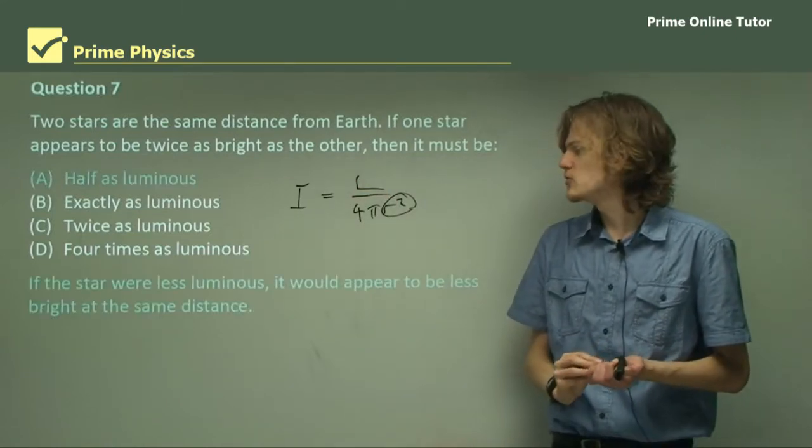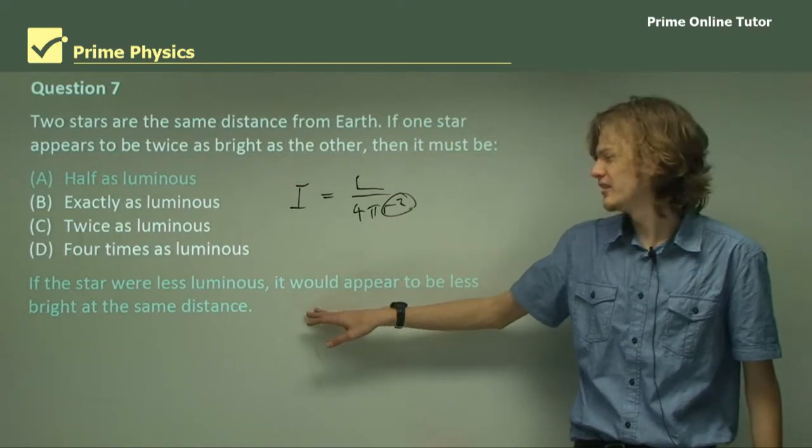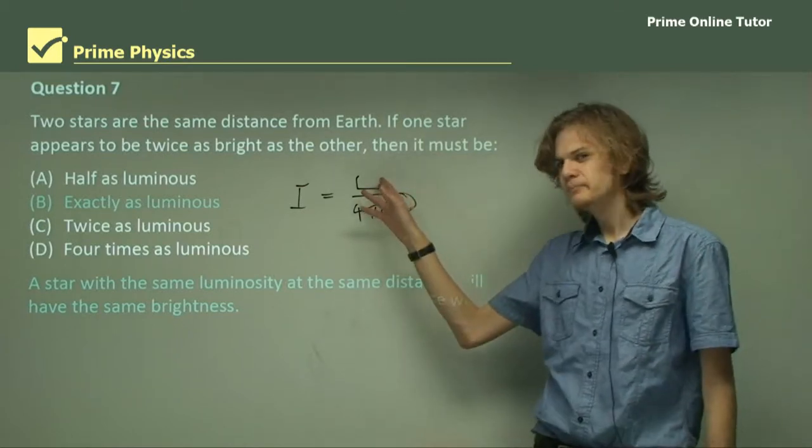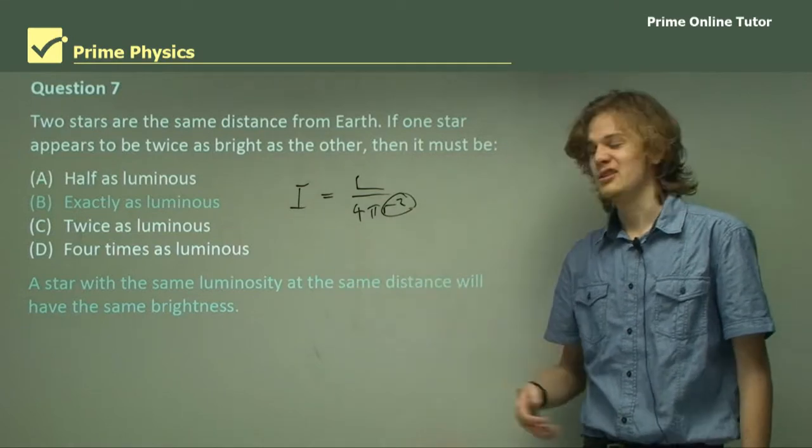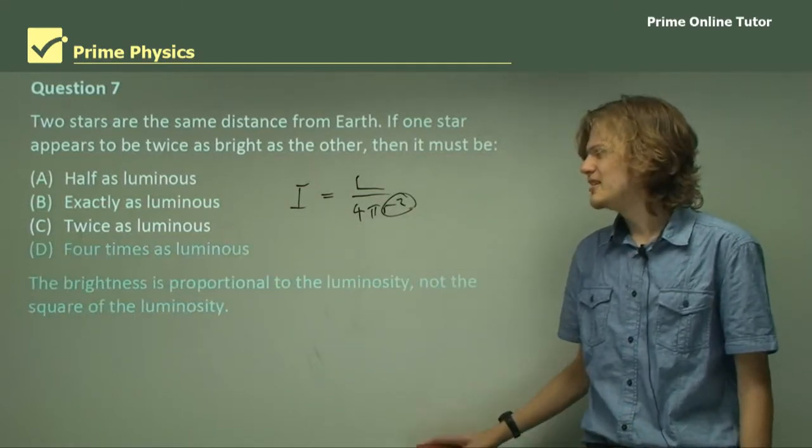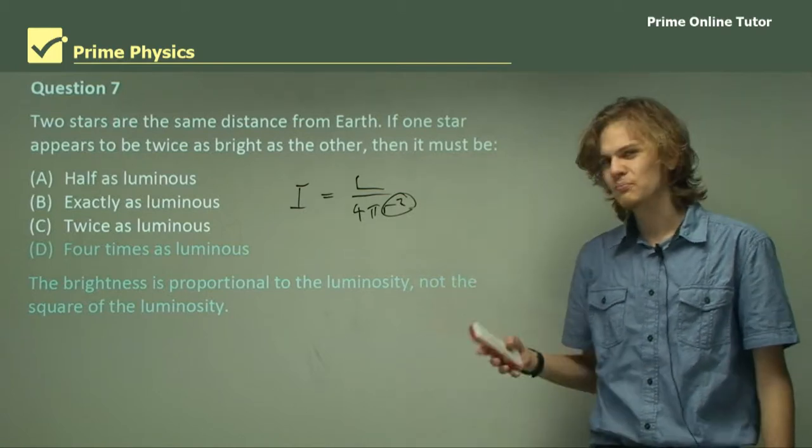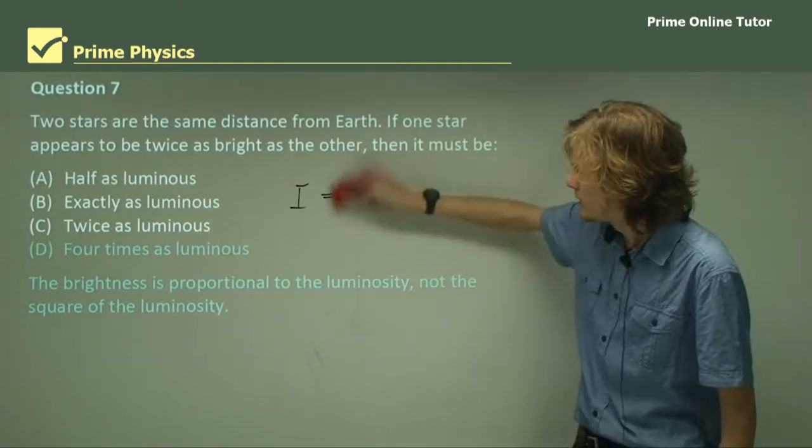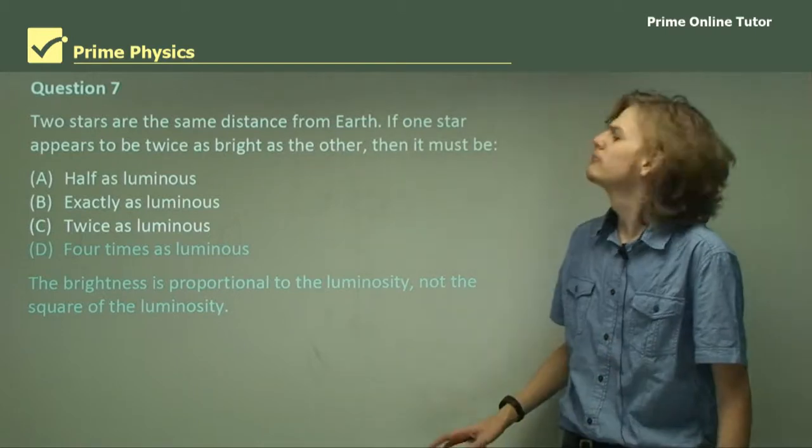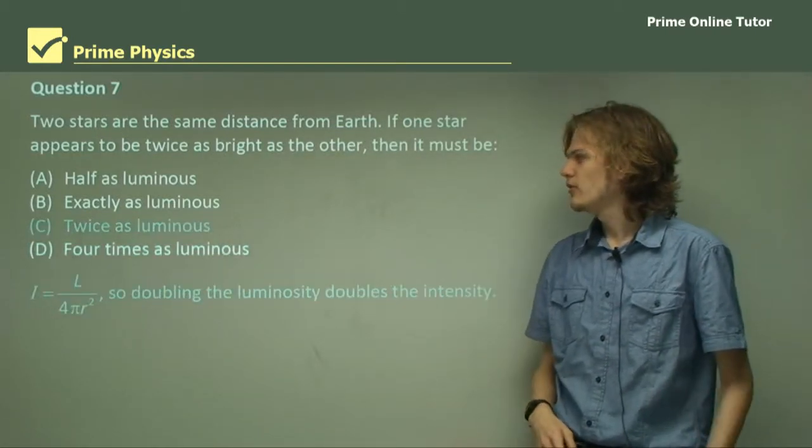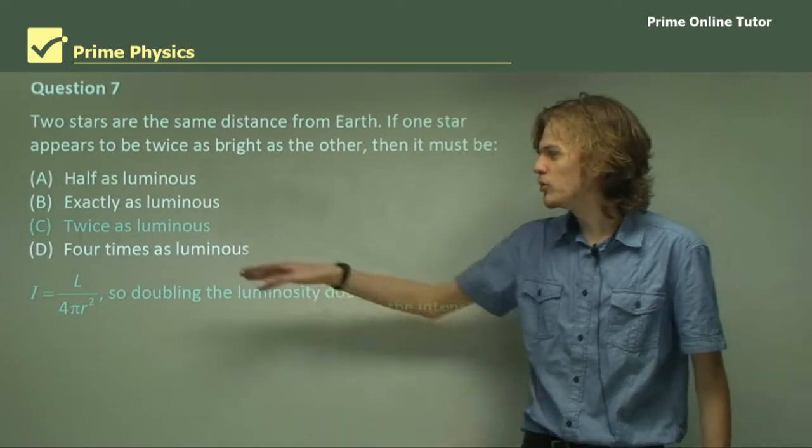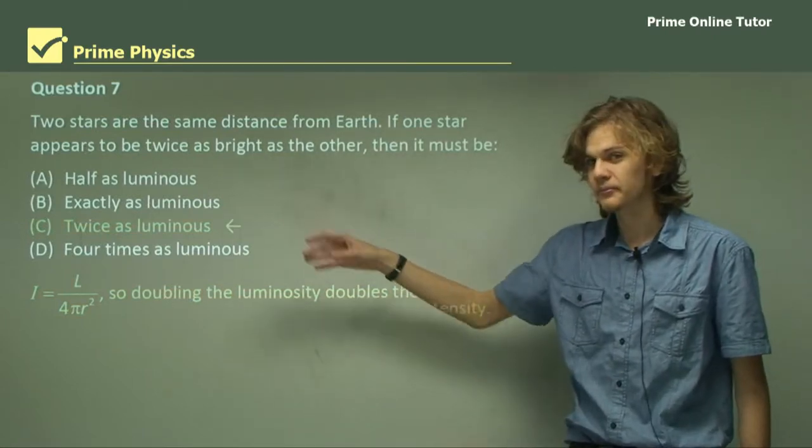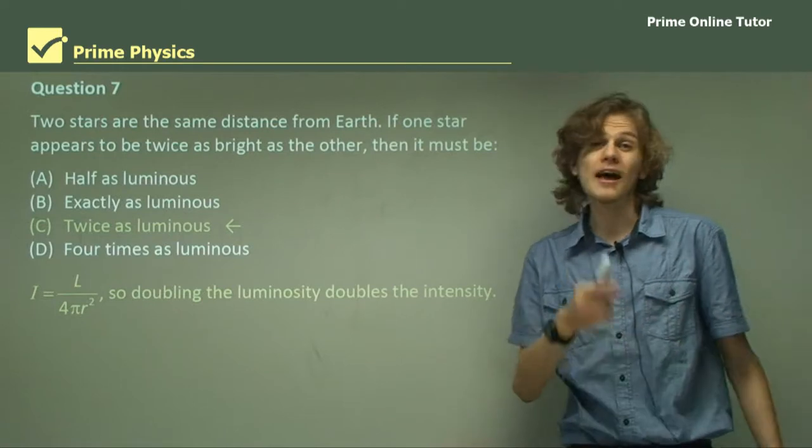Let's look at our options. Is it half as luminous? If the star were less luminous, it would be less bright, so this isn't right. Exactly as luminous? If L doesn't change and R doesn't change, then I won't change either. So B can't be right. Four times as luminous? This might sound right because there's a square in the equation, but it's in the distance, not the luminosity, and the distance doesn't change. Our final option is twice as luminous. If we double the luminosity, we double the intensity. So C is the right answer.